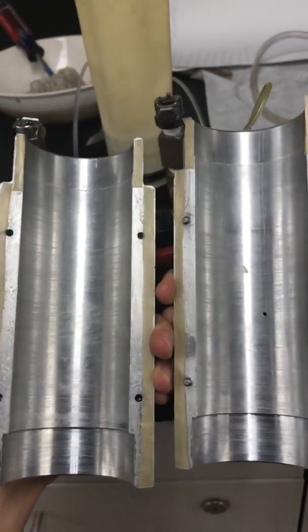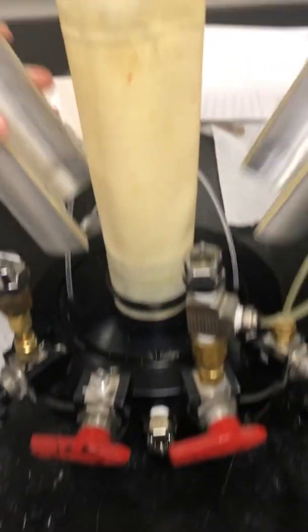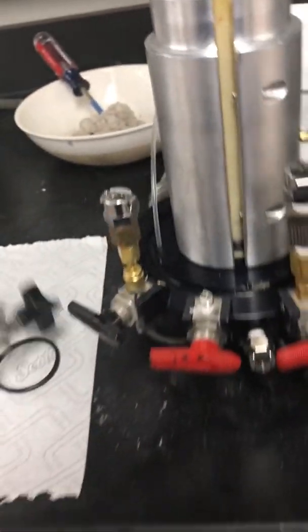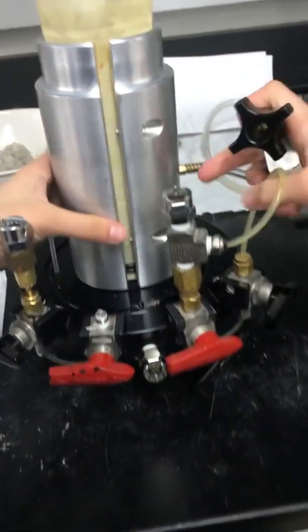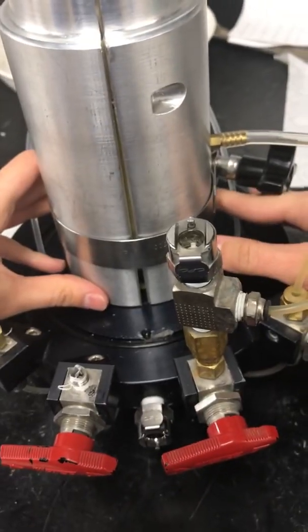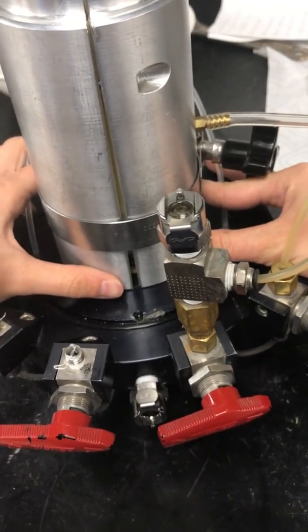So once you have your membrane stretcher all set up like this, you're going to want to put it over your membrane, and you're going to use this to put both of the pieces together. You're going to also want to put it towards the bottom part of the membrane stretcher.